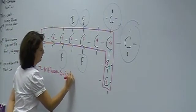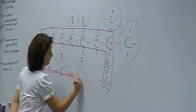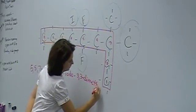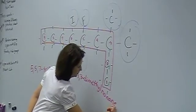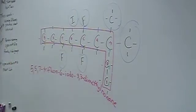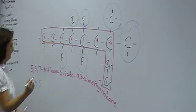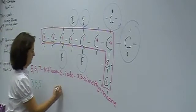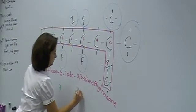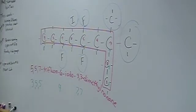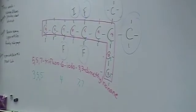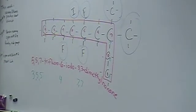5,5,7-trifluoro, 6-iodo, 3,3-dimethyl... 5, 5, 4, 7. Okay, that could be right. I'm not sure. If I don't hear anything from you, I'm going to assume that it's right.